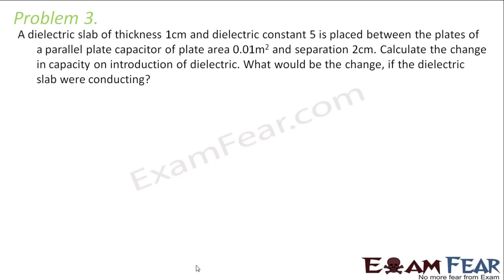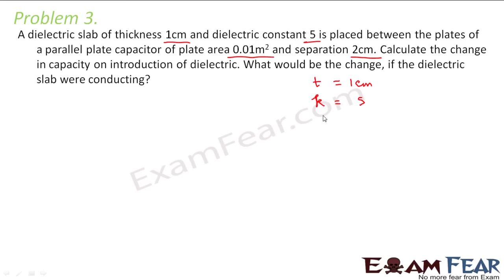Now let us look at the next problem. It says a dielectric slab of thickness 1 cm and dielectric constant K = 5 is placed between the plates of a parallel plate capacitor of plate area A = 0.01 m² and separation D = 2 cm, that is 2×10⁻² m. The thickness T is 1×10⁻² m.